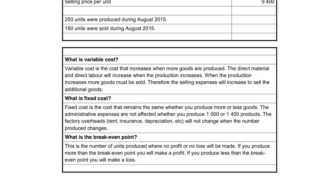What is the break-even point? This is a very important thing in a manufacturing business. If you don't know what your break-even point is, it means that you can work at a loss. This is the number of units produced where no profit and no loss is made — exactly the number of units you produce to just break even. If you produce more than this break-even point, you will start making a profit. If you produce less than the break-even point, you will make a loss.